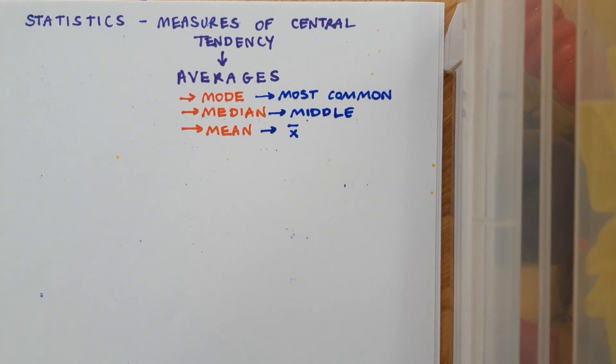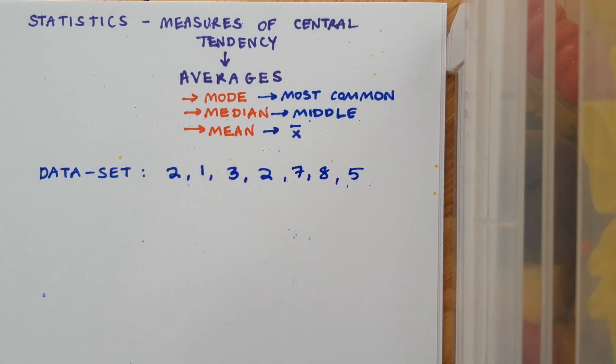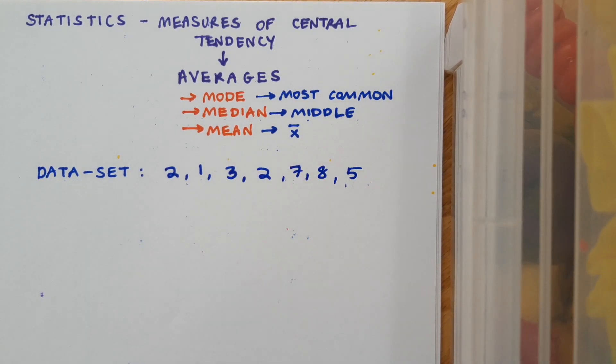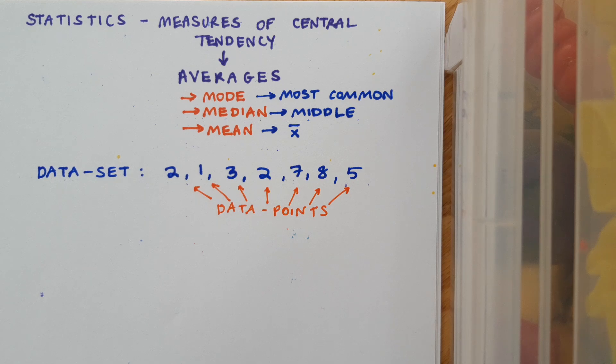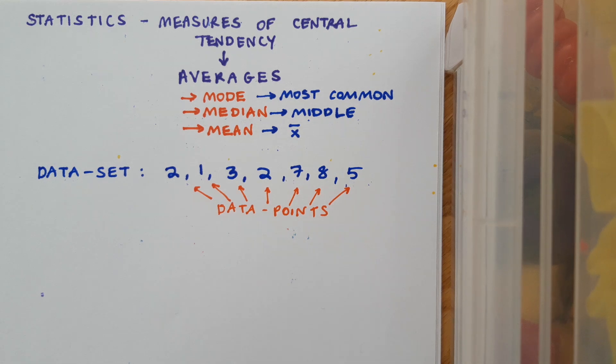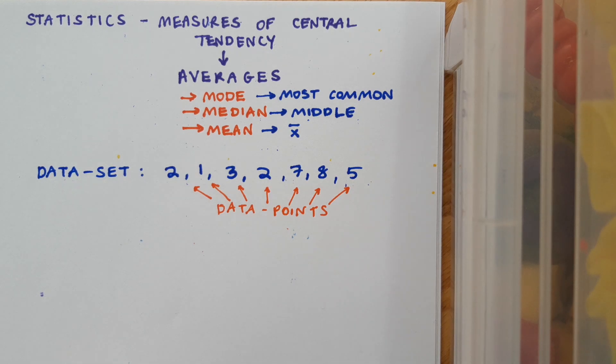We're going to start off with a list of numbers, and we're going to call that our data set. So my data set here is 2, 1, 3, 2, 7, 8, 5, and each value in this data set is called a data point. Now clearly in this particular data set our data points are all jumbled up. They're not in the correct order, so I must start by sorting that out first.